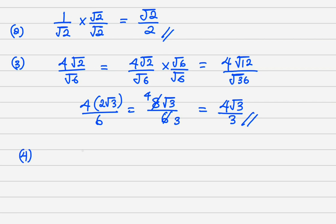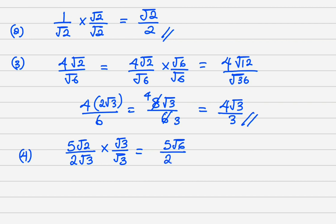The last one, number 4: I can have 5 root 2 all over 2 root 3. Multiply by root 3 over root 3. This gives 5 root 6 all over 2 times root 9, which is 5 root 6 all over 2 times 3, giving 5 root 6 all over 6.